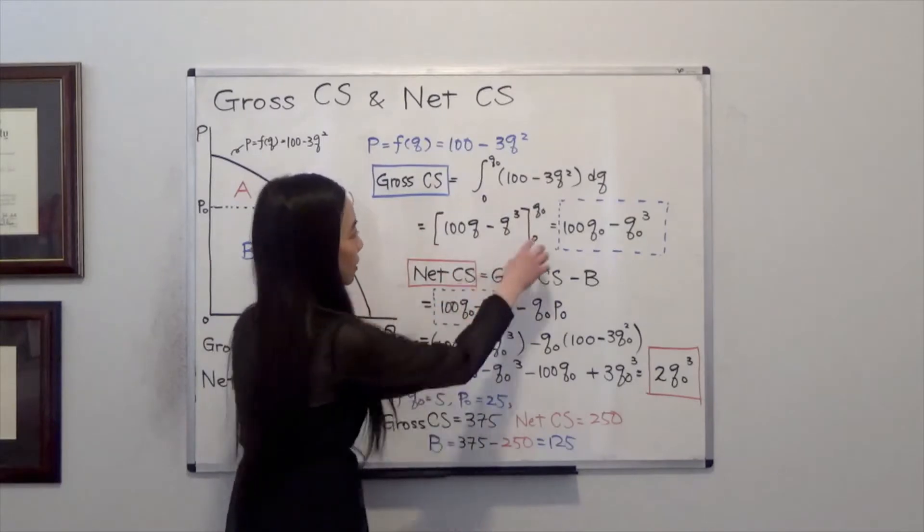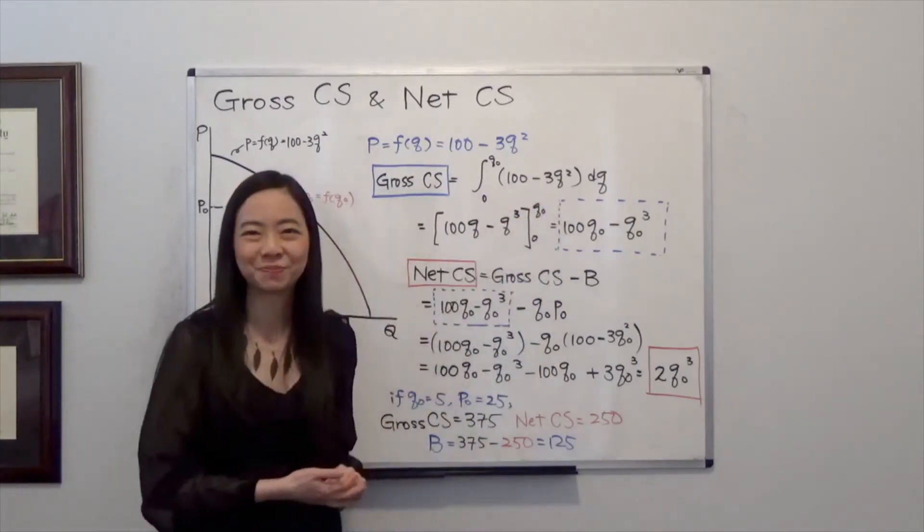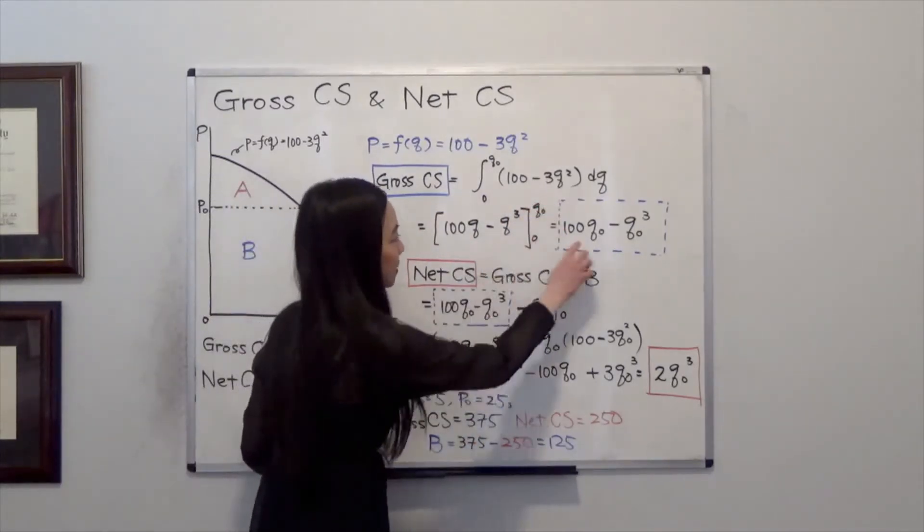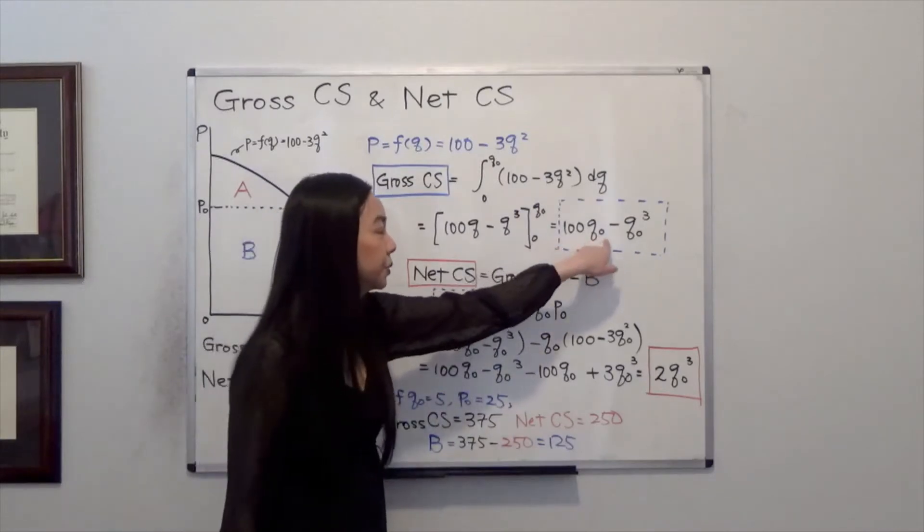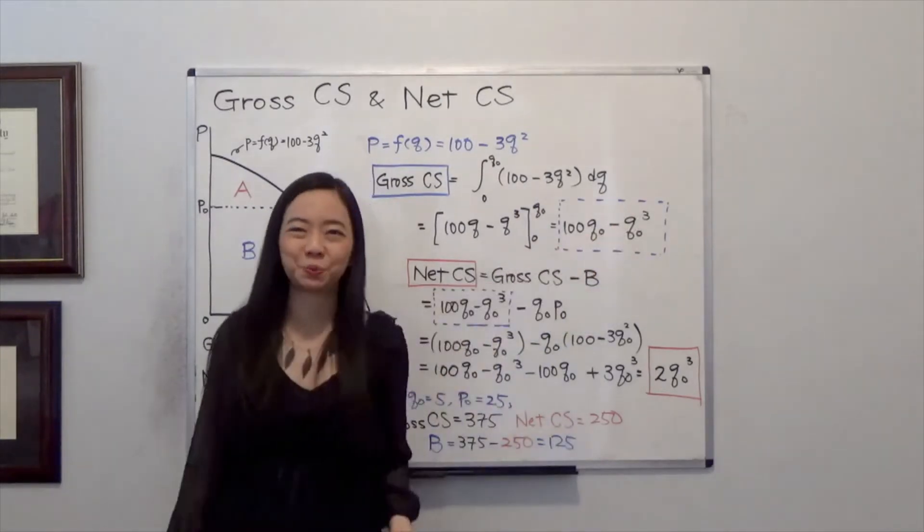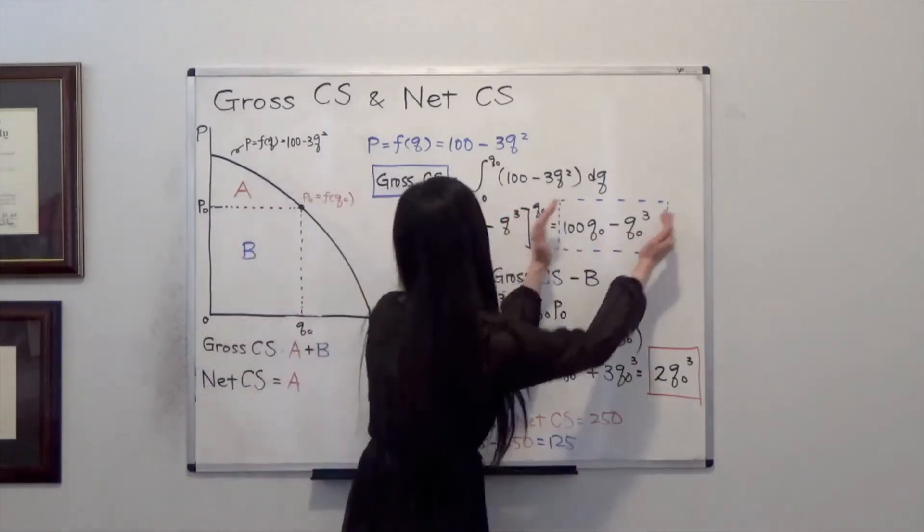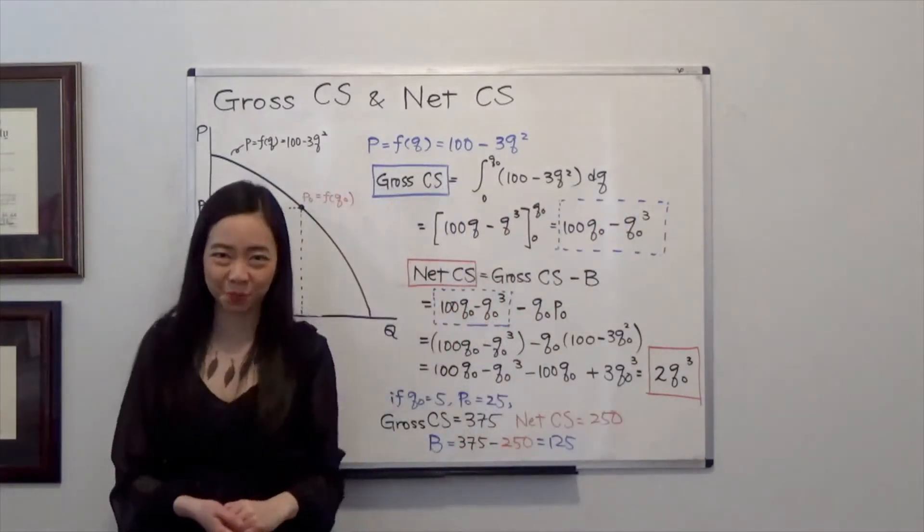And then we're going to integrate that from 0 to Q0. And you plug in this number, you will get 100Q0 minus Q0 cubed. So this will be our gross consumer surplus.